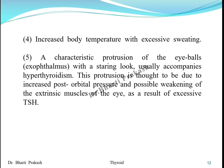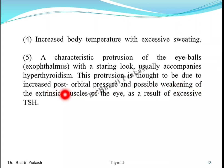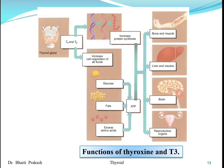There is increased body temperature with excessive sweating, and a characteristic protrusion of the eyeballs with a staring look. This protrusion of the eyeballs is thought to be due to increased post-orbital pressure and possible weakening of the extrinsic muscles of the eye as a result of excessive thyroid-stimulating hormone.